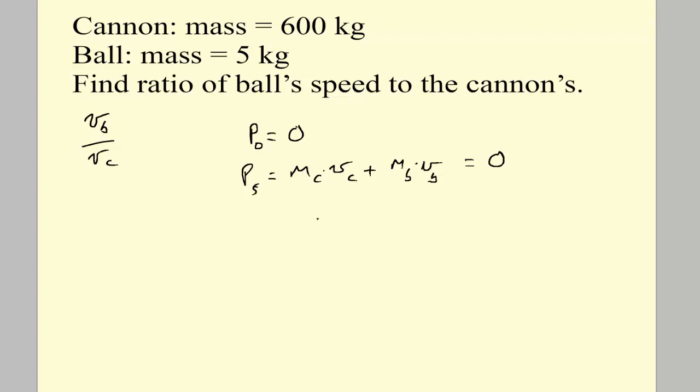So we'll move one of those terms to the other side. Don't be worried about the negative sign. And I want to end up with VB over VC. So I'll divide both of these by the velocity of the cannon. And since we're trying to get VB over VC, we now divide by the negative of the mass of the ball. So that gives us the mass of the cannon over the negative mass of the ball equals VB over VC.